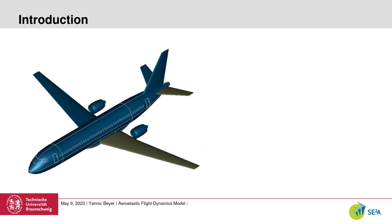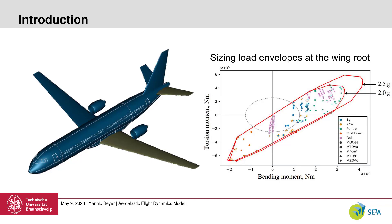This is achieved, among other technologies, by considering the use of load alleviation technologies. Two sizing cases are applied by assuming either a 2.5G or a reduced 2.0G load factor for the pull-up maneuver load cases to take into account intense maneuver load alleviation and gust load alleviation. This results in a 5.3% reduction in primary structural mass of the wing.